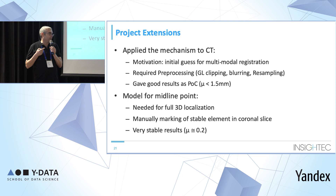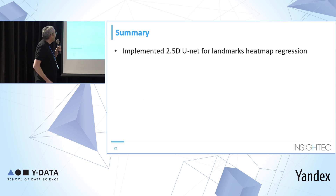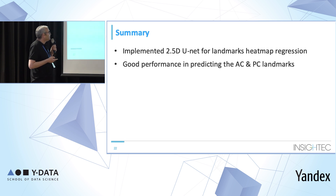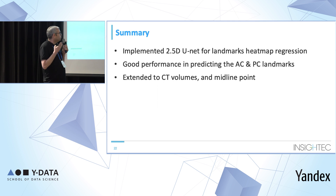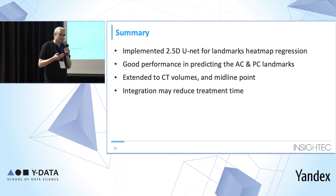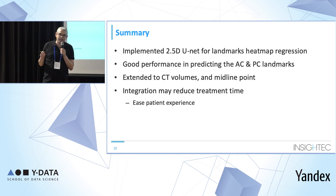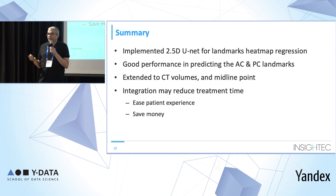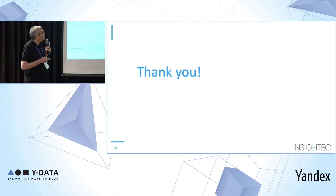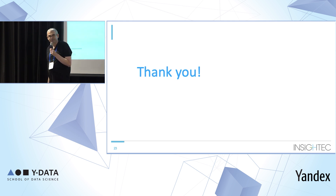The midline point results were very good — the average error was about 0.2 millimeters as the feature was very strong. To summarize: I implemented a 2.5D U-Net for heatmap regression to find the landmarks. The results were quite good and definitely acceptable for what the company needs. I extended it to CT volume and midline point detection. Integration of this solution may reduce treatment time, easing the patient experience, and will also save money since MRI time is very expensive. Thank you all for your attention.